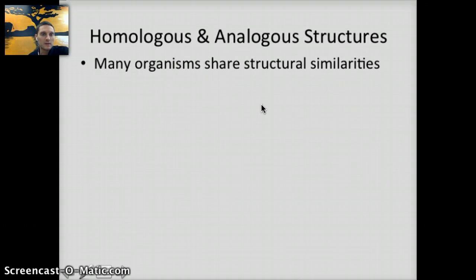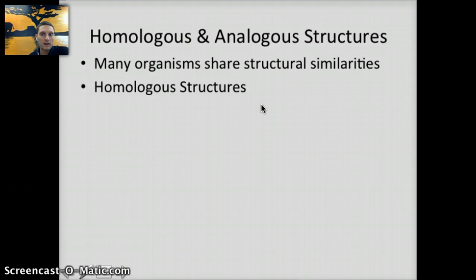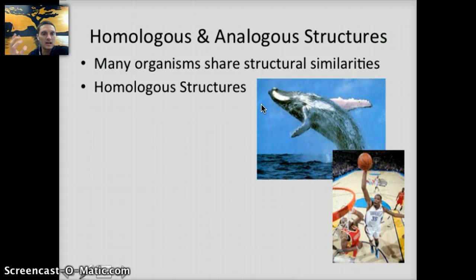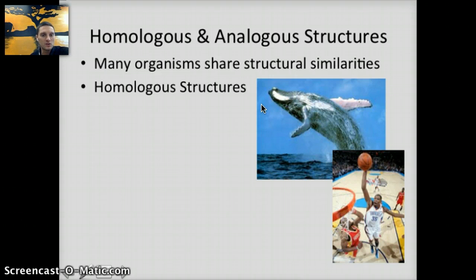This comes back to the idea of homologous structures. Many organisms share structural similarities caused by their DNA sequence. Homologous structures are similar in structure, position, and development due to a common ancestor, though they may not be similar in function. A great example is the pentadactyl arm bones seen across species — humans and whales share the same bones (radius, ulna, carpals, metacarpals, and phalanges) in slightly different structures, used for different purposes, suggesting these species share a common ancestor.